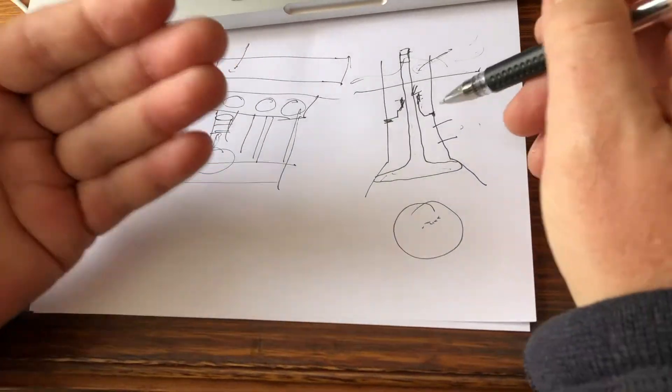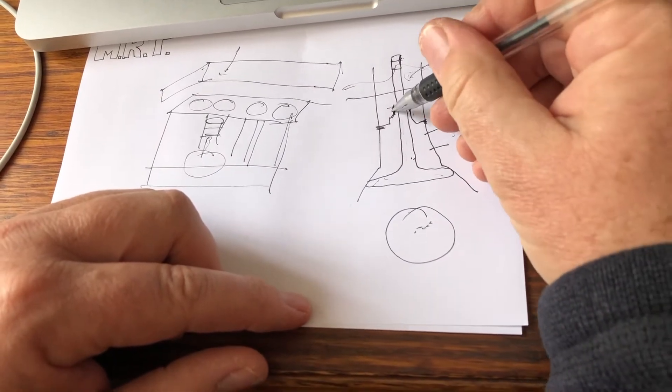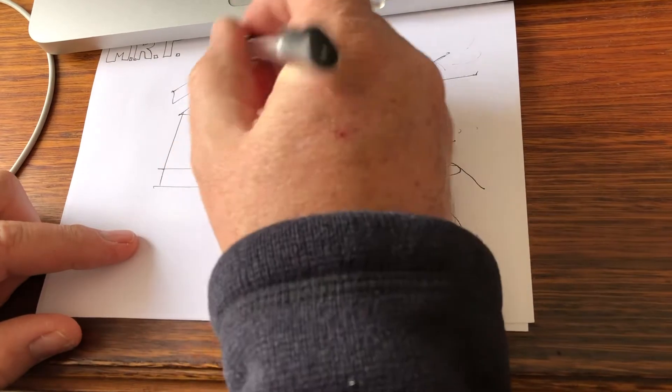That's what a valve stem seal is. This is the valve, this is the stem of the valve and this is the seal that stops it up in the top end here.